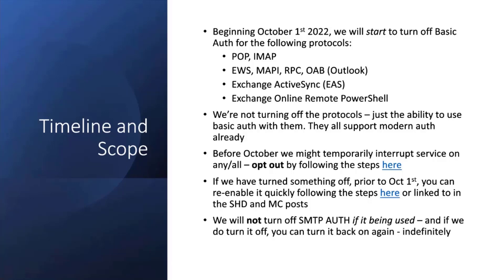SMTP auth, used for sending mail outbound, is a special case. We've already turned off SMTP auth for customers that don't use it — we've turned it off for millions of tenants who had it enabled but weren't using it, protecting them. But if SMTP is still in use, we are not going to touch it. The main reason is there are a lot of hardware devices that really can't be updated to support OAuth flows, so we will allow SMTP auth for the foreseeable future.